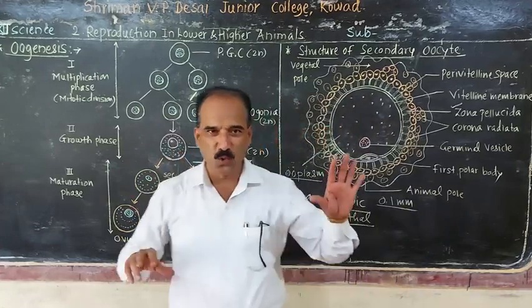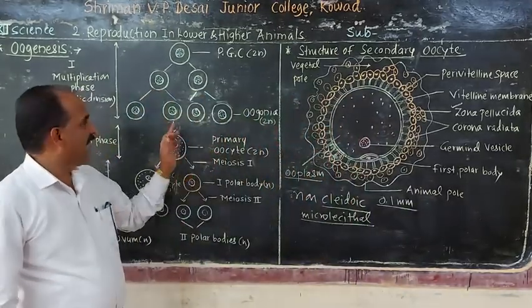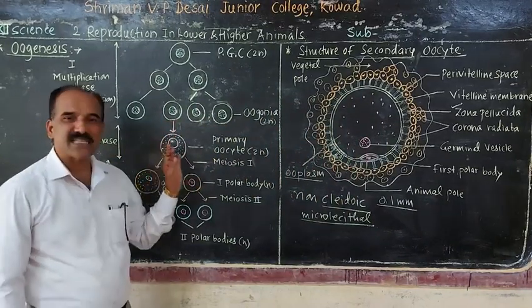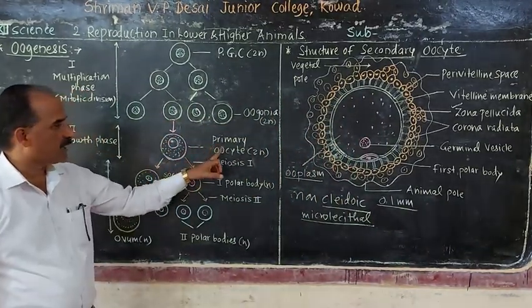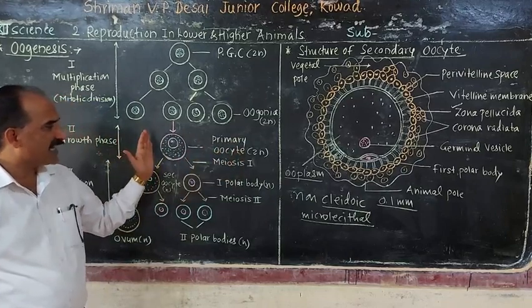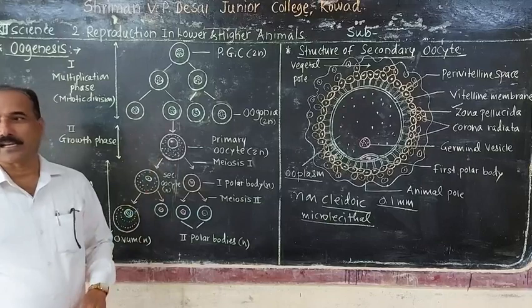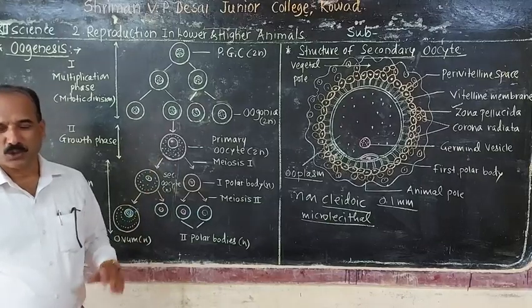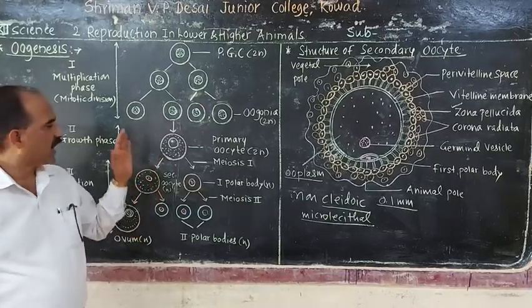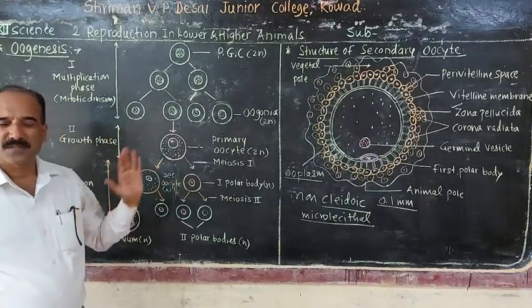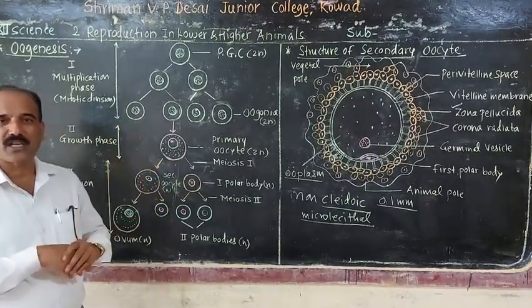One of the oogonia stops division and increases in size; it is called the primary oocyte. During this development, cell organelles like the endoplasmic reticulum, Golgi bodies, and mitochondria increase in number as the cell grows.